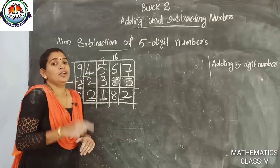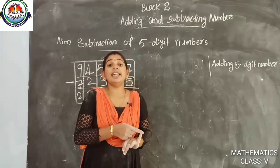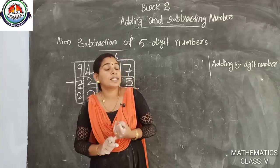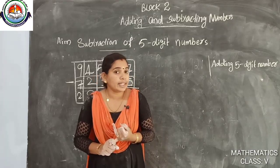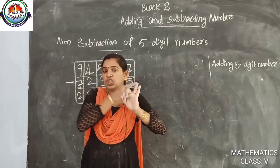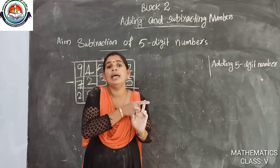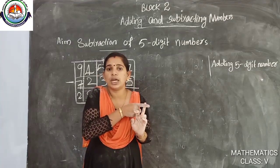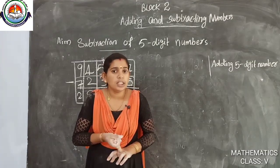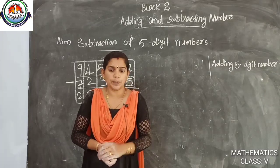Today we discussed how to subtract five digit numbers using the abacus, using the place value chart, and without the place value chart. Anyone have doubts? We will do more problems later. Thank you, thanks everybody.